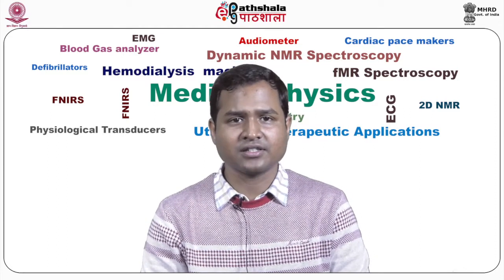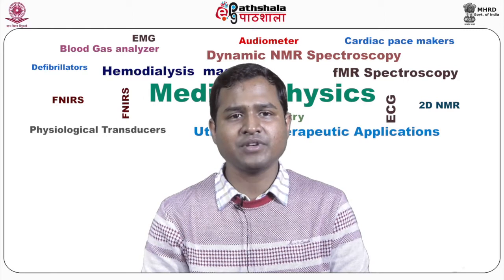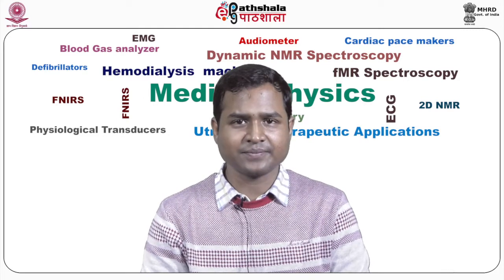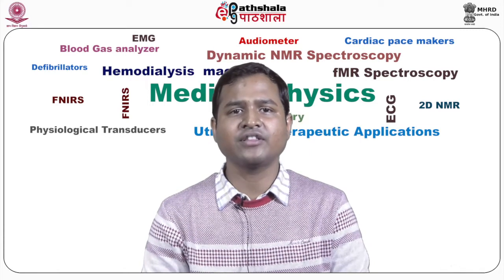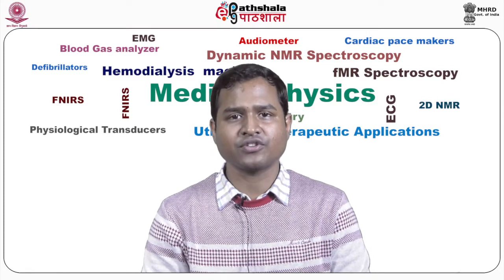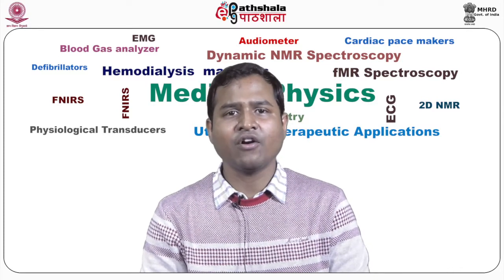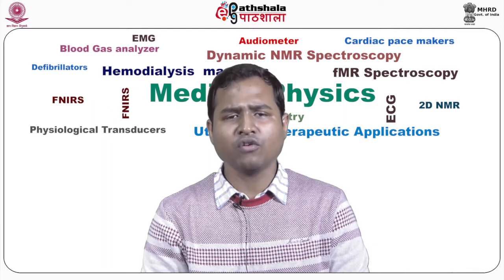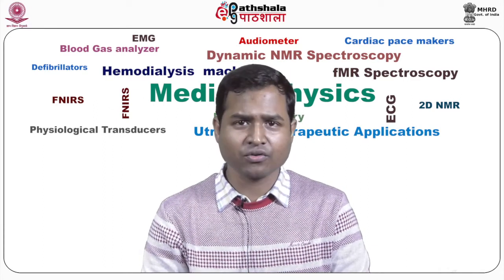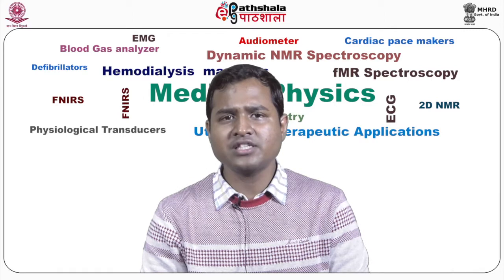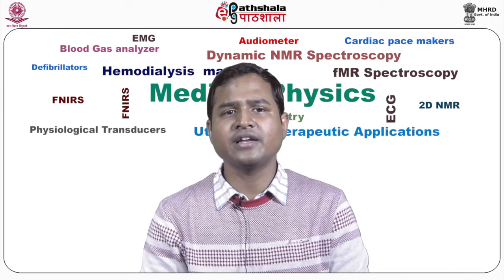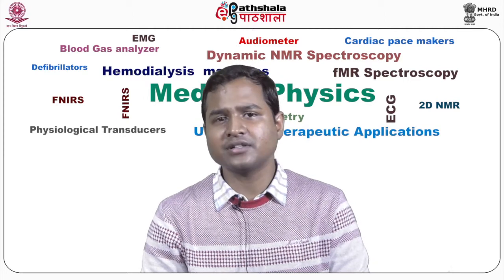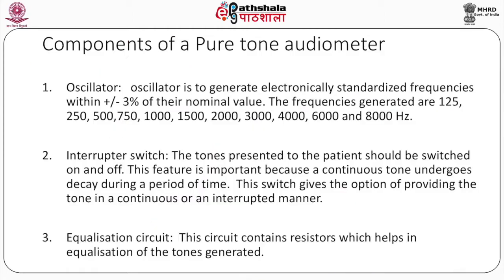The level at which the subject is able to identify three words out of six correctly is taken as the speech reception threshold. The SRT of a normal subject is very close to its pure tone threshold, and SRT is generally two decibel lower than the average of pure tone hearing level threshold at 500 hertz and 1000 hertz.